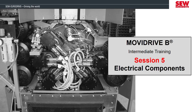Hello everyone, welcome to session 5 of this training course. Today we are going in depth with the motor encoders and the brake rectifiers that we offer, and I'll show you some helpful points about connecting these accessories. One of the most common troubleshooting calls we get are when a motor is drawing high current. We'll end this session by showing the different types of motor terminal block configurations you can see on our standard motors and how to interpret those connection diagrams.